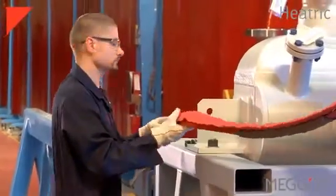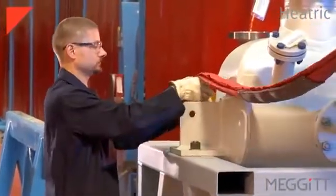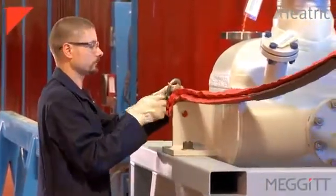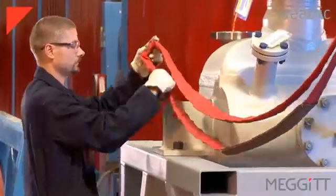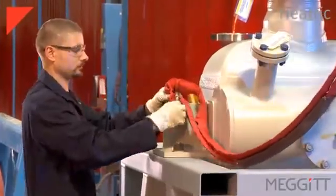Lifting lugs are typically located at each end of the exchanger and are suitable for fitting with D-shackles for the attachment of lifting slings or chains. The lifting points can be incorporated into the N-type supports.